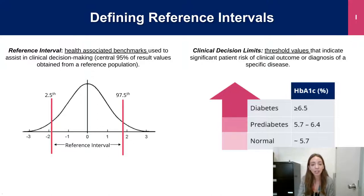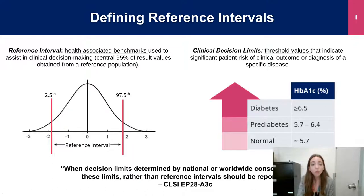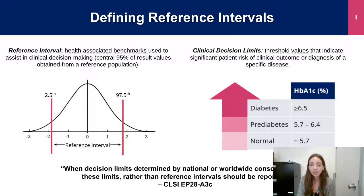A key example of clinical decision limits is HbA1c, which is used in the diagnosis and stratification of diabetes and prediabetes routinely in both the pediatric and adult population. CLSI states that when decision limits are available and determined by national or worldwide consensus, they should be used as opposed to reference intervals. Reference intervals represent the normative range of blood test results expected in a particular population, while clinical decision limits are often more evidence-based for a specific disease. Unfortunately, clinical decision limits are not available for the majority of laboratory tests, and thus reference intervals are commonly used and reported to patient charts for test interpretation.